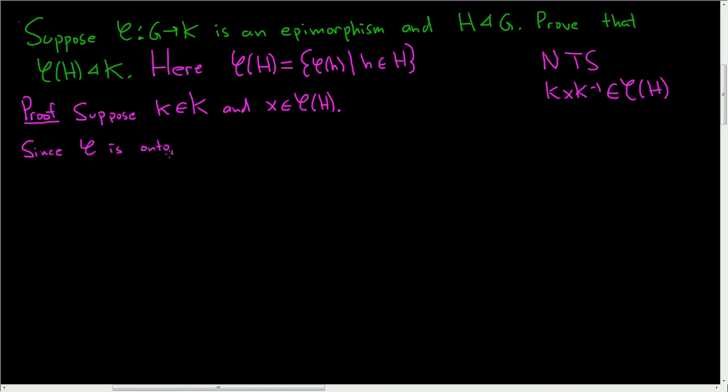there is some element which we'll call little g in capital G such that φ(g) is equal to k. Because k is in capital K and φ is onto, we can find a little g such that φ(g) is equal to k.